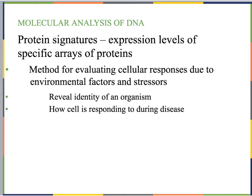Protein signatures are different amounts of proteins — expression levels of specific arrays of proteins. If we put a particular cell in an environment with some environmental factor, say we add a chemical, or a stressor like a higher or lower temperature than it normally likes, we can see its cellular response based on the proteins it produces. Thinking back to an organism's phenotype, the DNA stays the same, but adjusting environmental factors reveals what proteins are expressed and can reveal the identity of an organism.